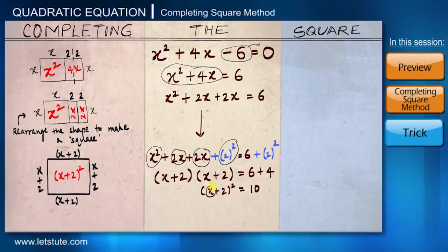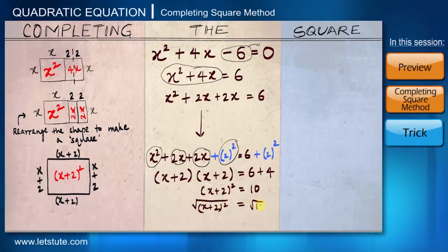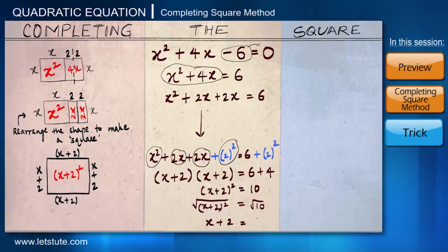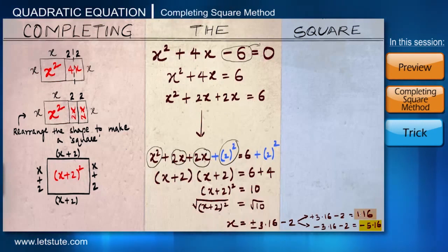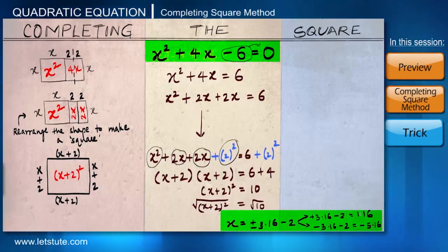Now if I want to find the value of x, the next step is very easy. I just have to take square root on both sides. And root of (x + 2)² will give me x + 2. And root of 10 would be approximately ±3.16. And if I take even this positive 2 on the other side, we will get two possible values for x. One will be positive 1.16 and the other would be negative 5.16. So for this equation x² + 4x - 6 = 0, after solving it, we get two possible values of x.